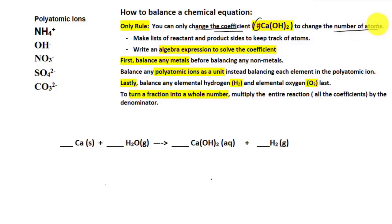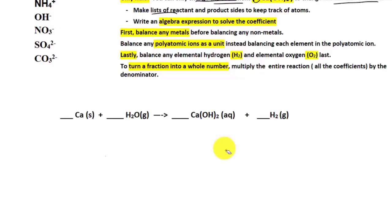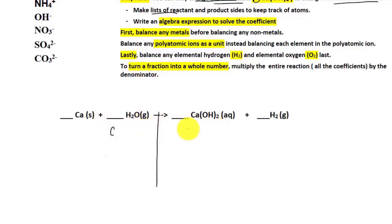That's the only method you are allowed to use to manipulate the number of atoms on both sides. As always, if we try to balance a chemical reaction, we need to make a list of what's on the reactant side and what's on the product side. We draw a line between the reactant and the product, and based on the law of conservation of matter, the list would be the same for both sides.